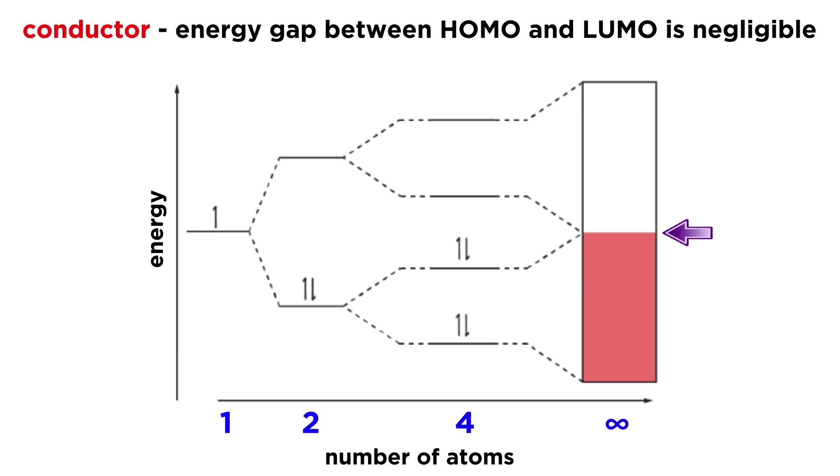Second, in a conductor, the difference in energy between the highest occupied molecular orbital and the lowest unoccupied molecular orbital is infinitesimally small, which means that electrons can move freely between orbitals, and this is the key feature of a conductor that allows it to conduct electricity.